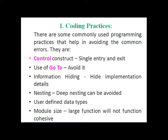We should avoid the usage of the goto statement, as it creates unnecessary complexity in compilation. Information hiding: we should hide the implementation details — just like in abstraction we show only necessary features, here we hide the implementation details. For nesting, deep nesting should be avoided — nested if statements, nested for loops, nested while loops. Only deep nesting should be avoided; one or two nested levels can be allowed.